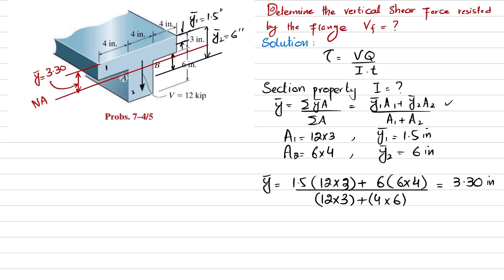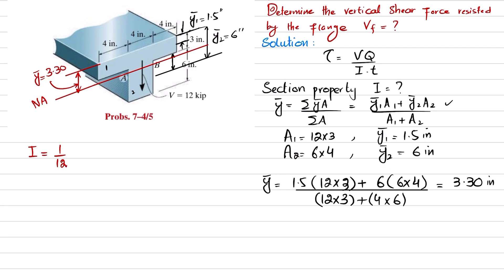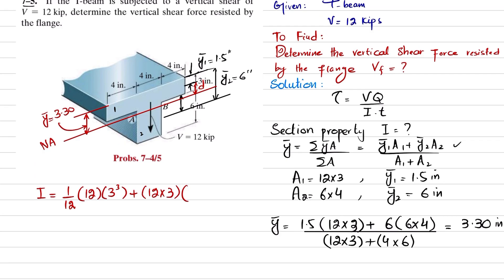Now we find the moment of inertia using the parallel axis theorem. For the first member (flange), since it is away from the neutral axis: I1 equals (1/12) times B times H cubed plus A times D squared, which is (1/12)(12)(3³) plus (12 times 3) times (3.30 minus 1.5) squared.